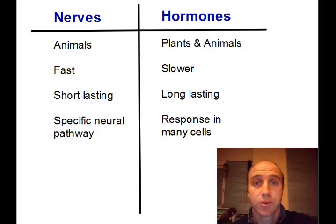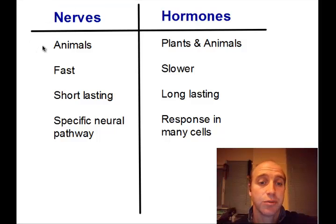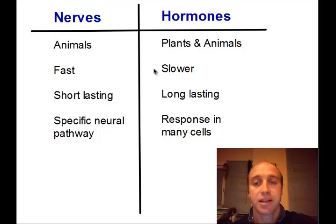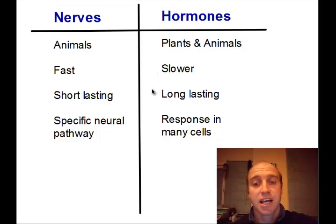Two main mechanisms that organisms use for this are nerves and hormones. Nerves happen only in animals, they're quite fast, don't last for a long time, and follow a specific neural pathway. Whereas hormones operate in both plants and animals, they're a little bit slower acting, have long-lasting effects, and allow a response in many target cells.